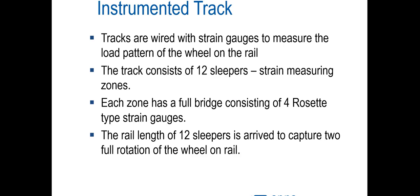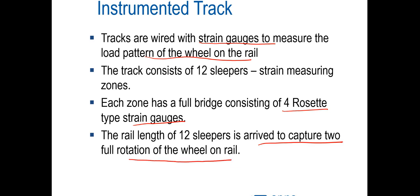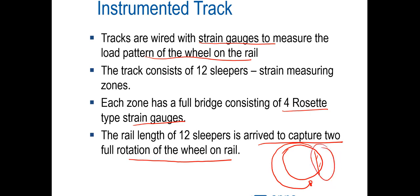The track is provided with strain gauges to measure the load pattern on each wheel. The instrumented section consists of 12 sleepers which serve as the strain measuring zones. This length is chosen to capture two full rotations of a wheel on the rail — only by capturing the full rotation can we confirm there is a flat. Without capturing the full rotation, we might miss the flat portion entirely and incorrectly conclude the wheel is okay.